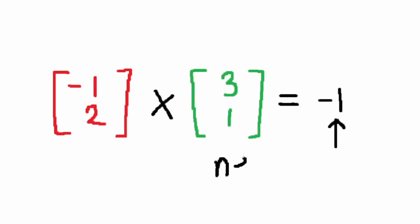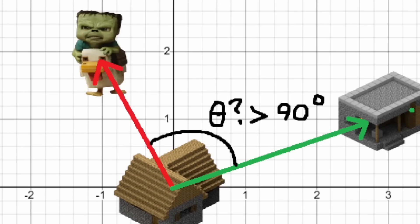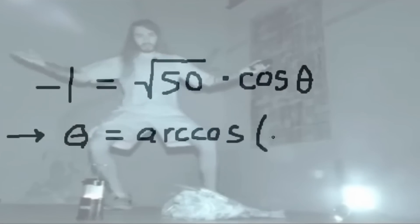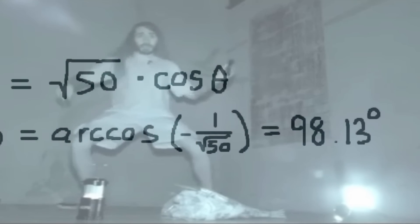Now because the dot product is negative, we know that the angle is greater than 90 degrees. Now we can set negative 1 equal to square root 5, times square root 10, or negative 1 equals square root 50, times cos theta. Rearrange, and we have theta equals arccos of negative 1 divided by square root 50, equals 98.13 degrees, which is greater than 90.